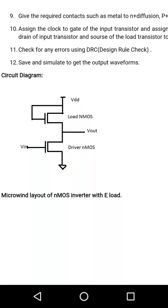So here is an example. We must select the metal layer for the source and the drain, and the polysilicon for the gate. Let us try to draw the layout in the Micromint software.